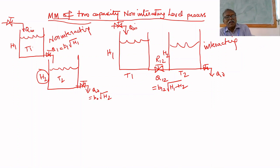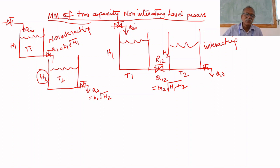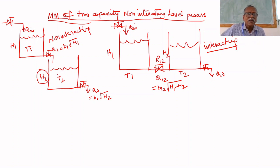The pressure difference across the valve R12 is the pressure difference between tank 1 and tank 2. Therefore, the flow rate from the first tank is a function of the second tank level. So the second tank interacts with the first tank — that is why this is the interacting type of level process. In the non-interacting case, the second tank does not affect the outflow rate of the first tank.